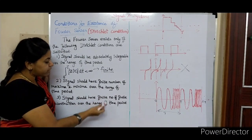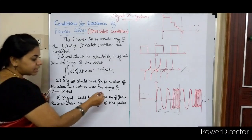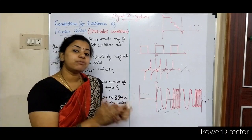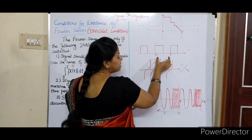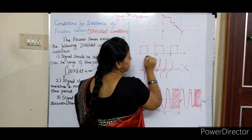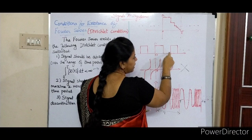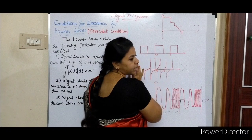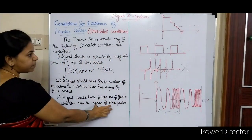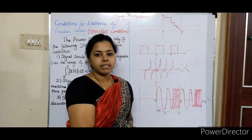Third condition: the signal should have a finite number of finite discontinuities over the range of one time period. Consider a signal over the interval 0 to T. If in that time period the signal has a discontinuity here, another discontinuity here, and another discontinuity here — that gives three discontinuities total. Three is a finite number, so this is a finite number of finite discontinuities and the condition is satisfied.